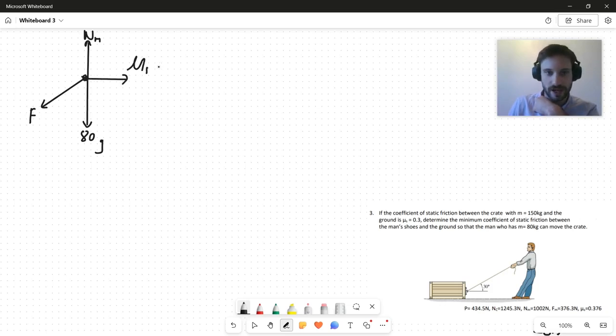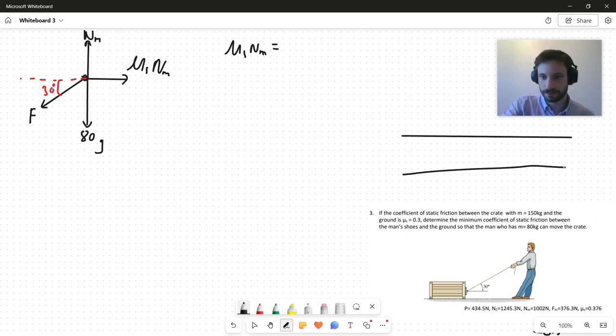Right, so as we know how to do, let's resolve horizontally here. Things moving to the right, you've got this μsNm equals... I've forgotten the geometry. Let's draw this out, so this is a 30 degree angle here.